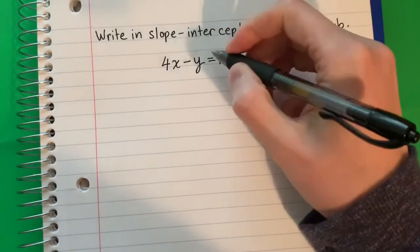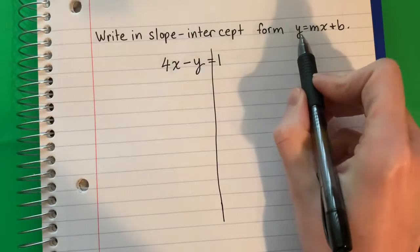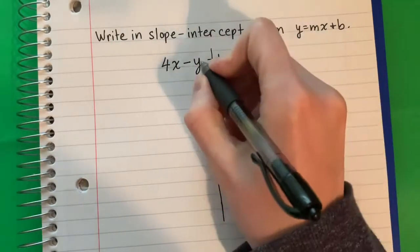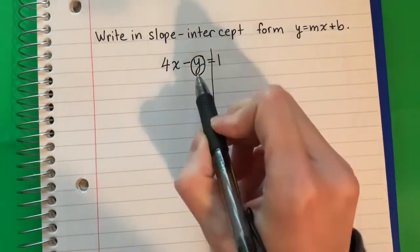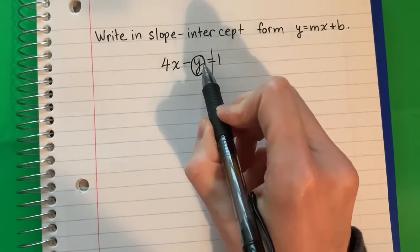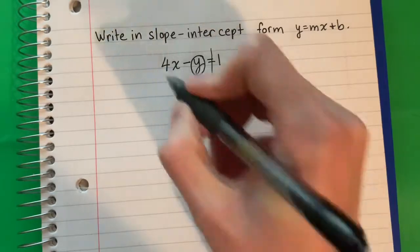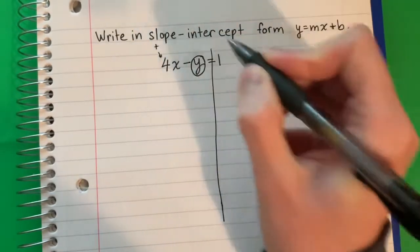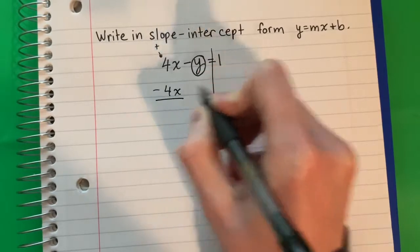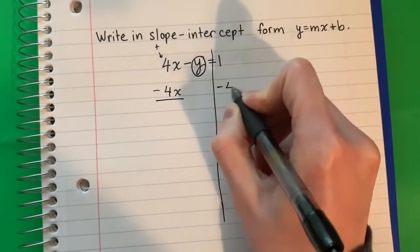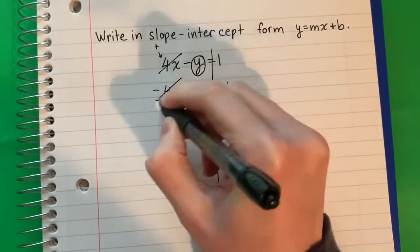I need the y alone. So I'm going to go ahead and draw my line to separate the left and the right. I want y alone, so I'm going to circle the y. Never move the y — I'm going to move the other one. The other one is 4x. This is positive 4x, so the opposite is negative. So minus 4x. Minus 4x. 4x minus 4x cancels to zero.